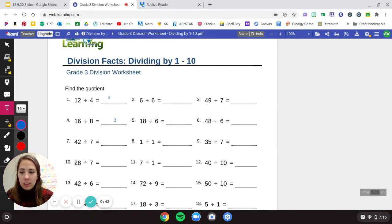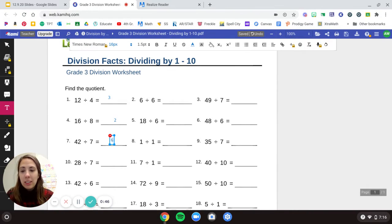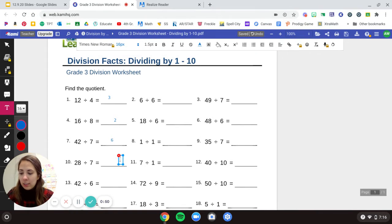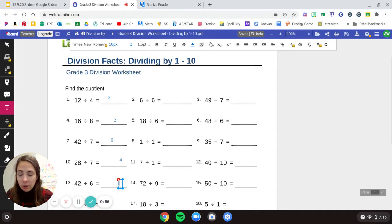42 divided by 7, I've got to do that each time, 42 divided by 7 is 6. 28 divided by 7 is 4. 42 divided by 6 is 7, because that's the opposite of up there.